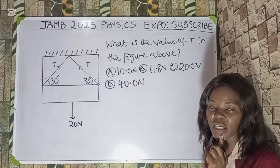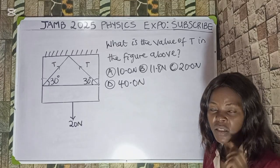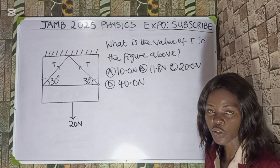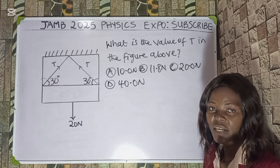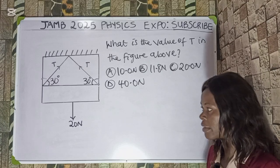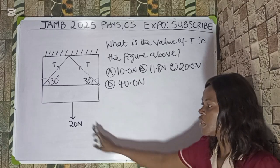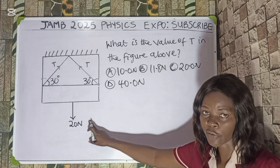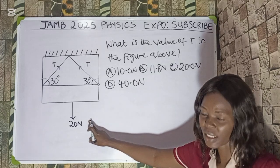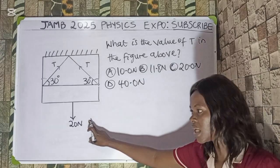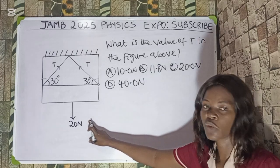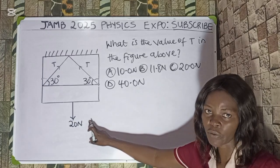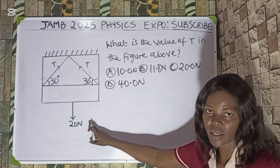If these forces are in equilibrium, they must be represented in magnitude and direction by the sides of a triangle taken in order. That means they are going to follow the direction of these forces to form a triangle. Once that's done, we are going to resolve it to find the unknown, which is the tension we are looking for. So let's go.